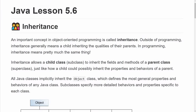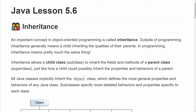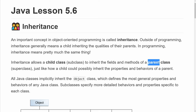Before we talk about inheritance in a programming context, let's talk about what inheritance means outside of programming. We often associate inheritance with a child inheriting the qualities and personalities of their parents. And in programming, inheritance means pretty much the same thing. Inheritance allows us to have a child class, also known as a subclass, to inherit the instance attributes, also known as fields, and the methods of a parent class, also known as a superclass.